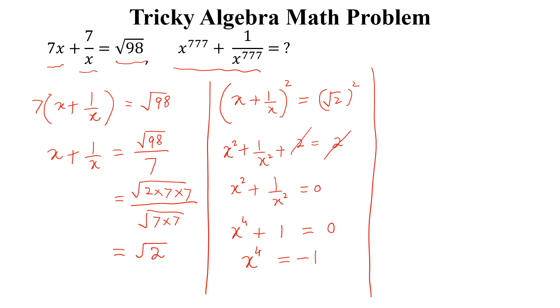So if we again take whole square, x to the power 4 whole square equal to minus 1 whole square, we will get x to the power 8 equal to 1.